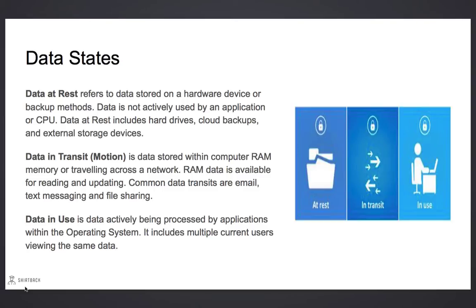Data in transit is information stored within a computer's RAM memory or that's actively traveling across a network. RAM memory data is available for quick reading and updating. Some common data transit methods are email, text messaging, and file sharing.